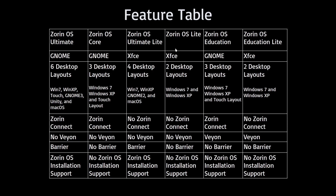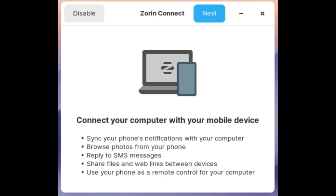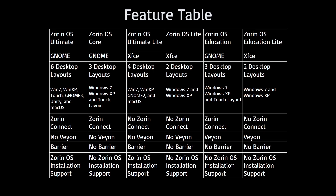Ultimate, Core, and Education all come with Zorin OS Connect, which basically allows you to connect your phone to Zorin OS. You can get your phone's notifications on your computer and your computer's notifications on your phone. There's a media control remote and it generally makes your phone integrate more with your computer. It's actually KDE Connect or GS Connect, just rebranded as Zorin Connect.